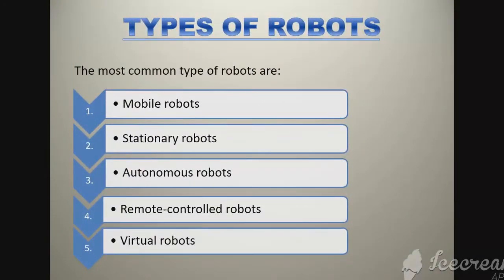Types of robots: the most common types of robots are first, mobile robots; second, stationary robots; third, autonomous robots; fourth, remote-controlled robots; and fifth, virtual robots.